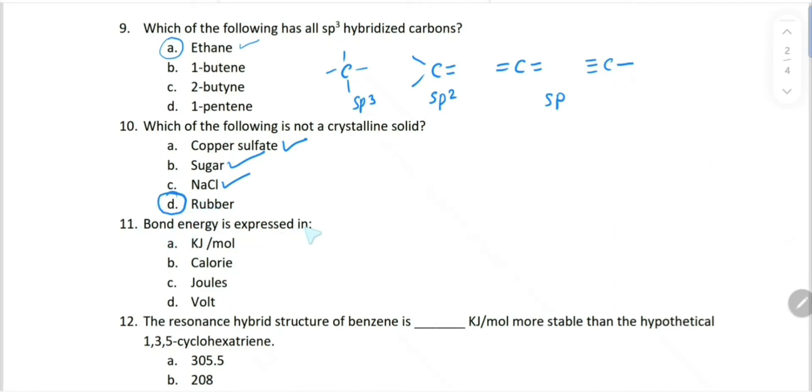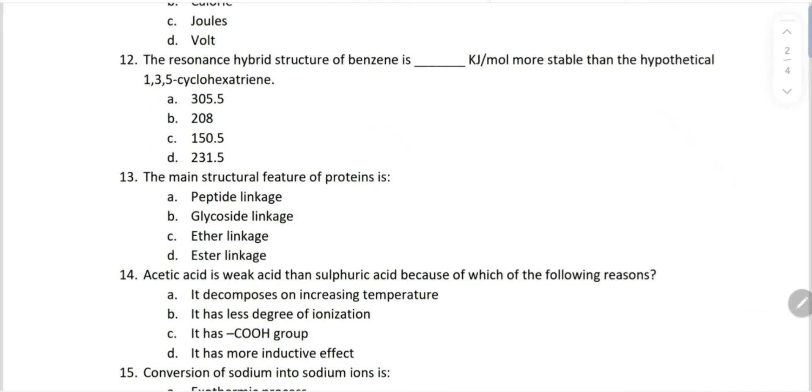Bond energy is expressed in... The unit of bond energy we use is kilojoule per mole. That is choice A.